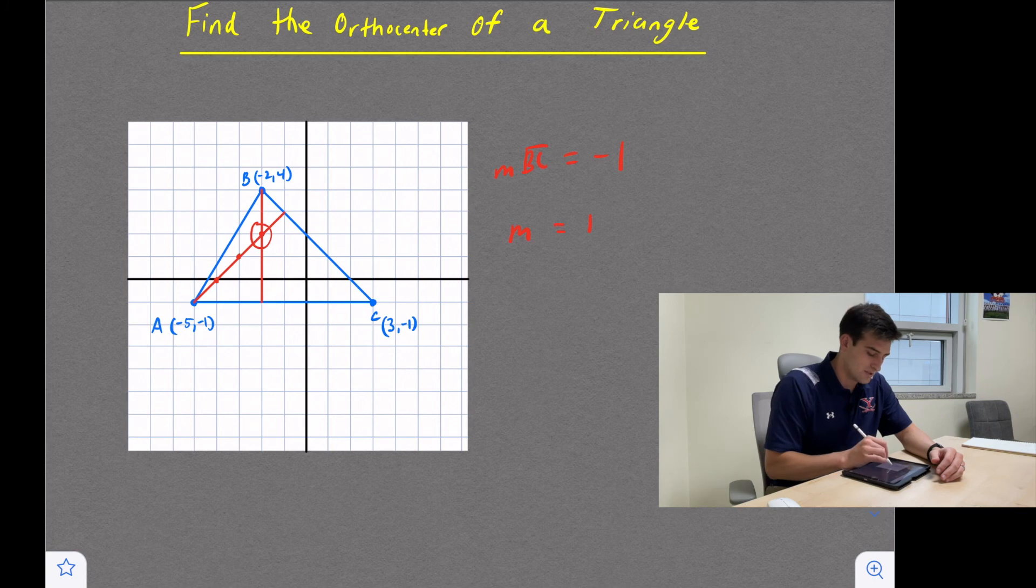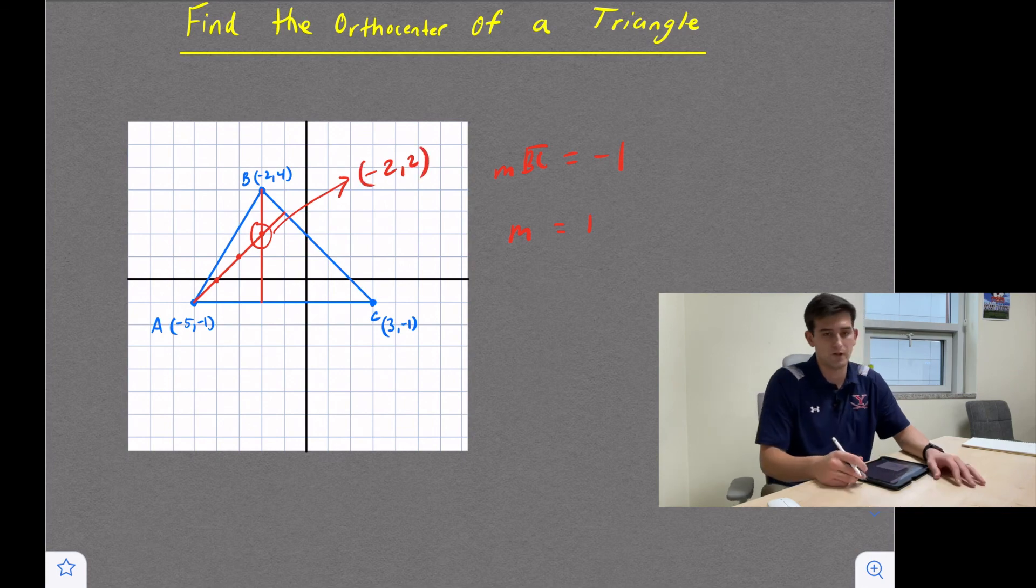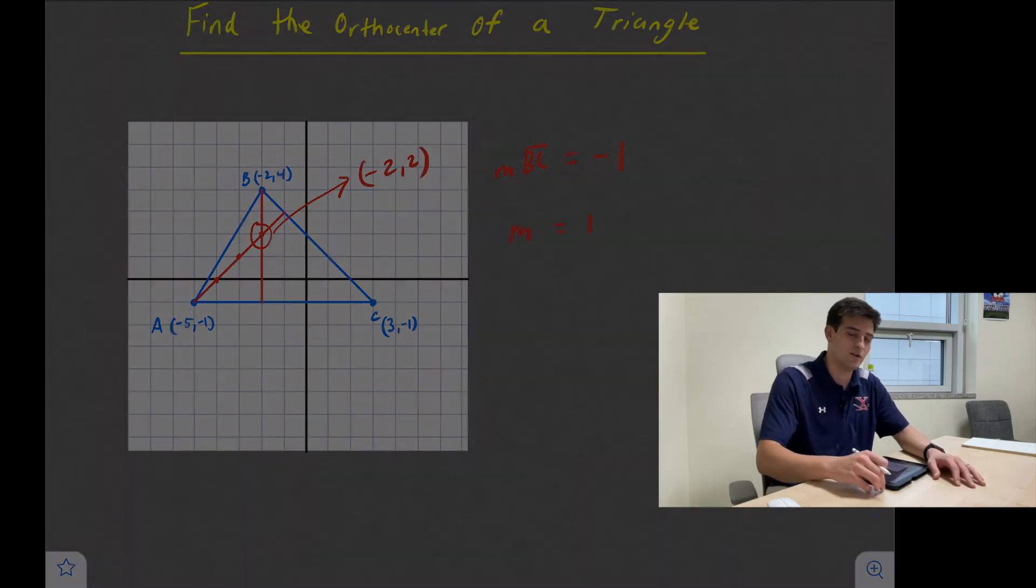And so now we can look and say that is negative two comma two, right? So our orthocenter is located at negative two, two. And that's how you find the orthocenter of a triangle on a coordinate plane.